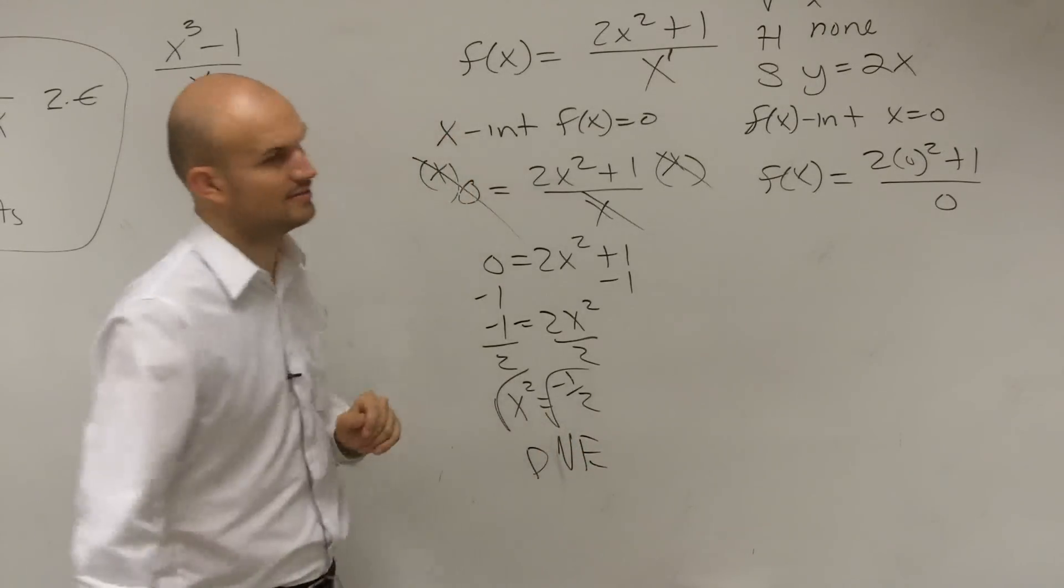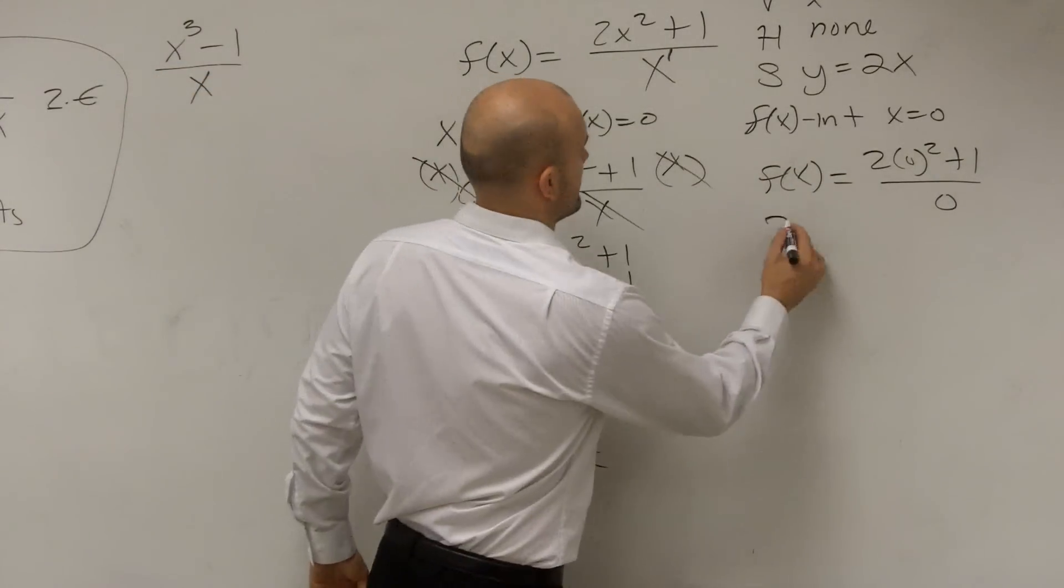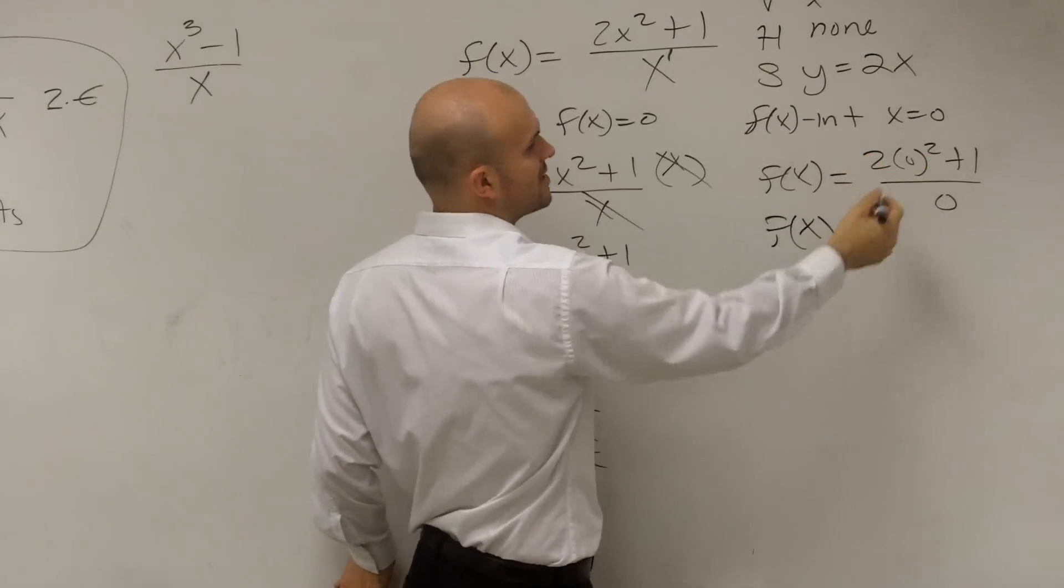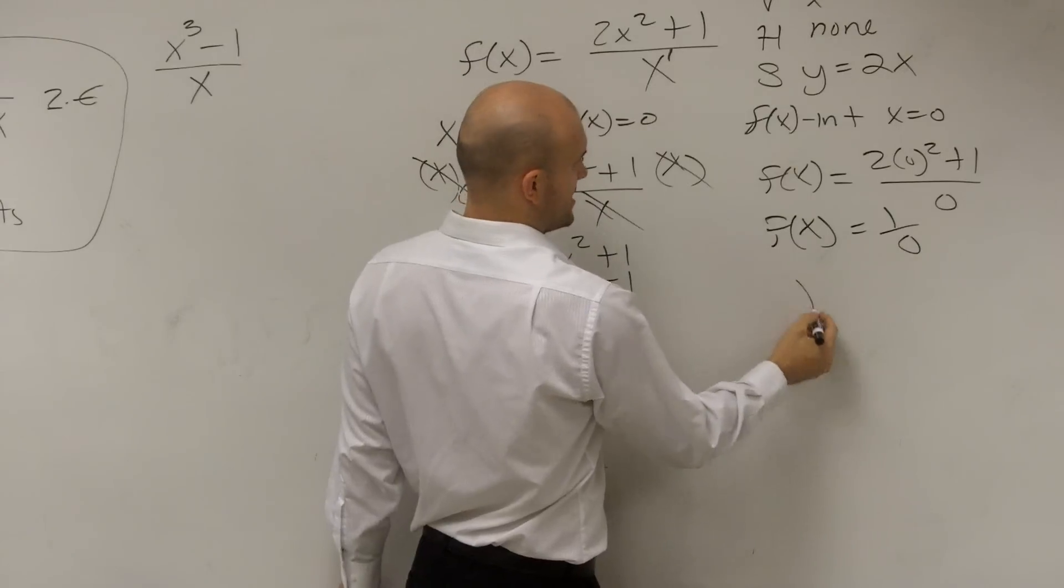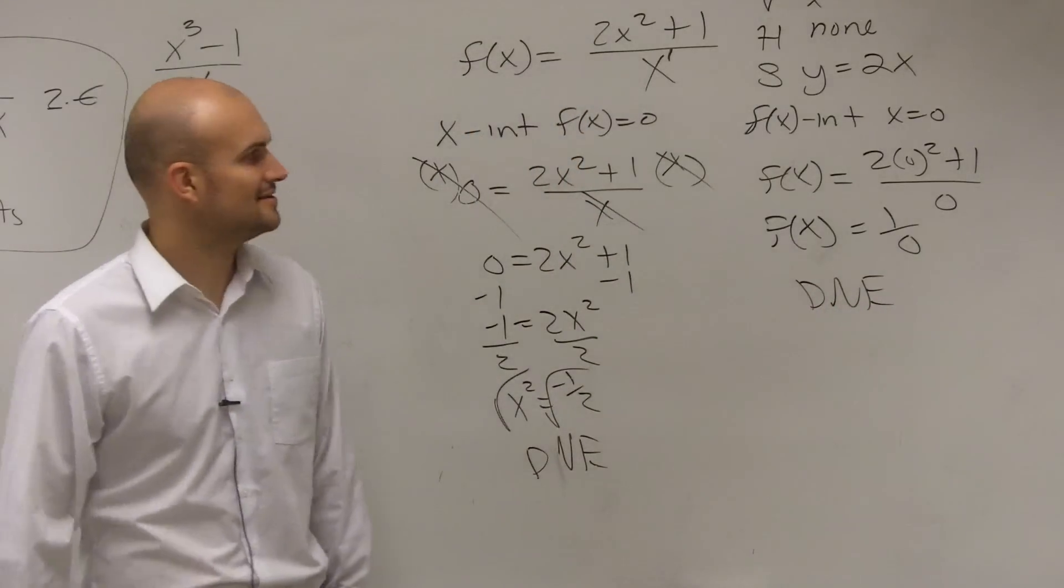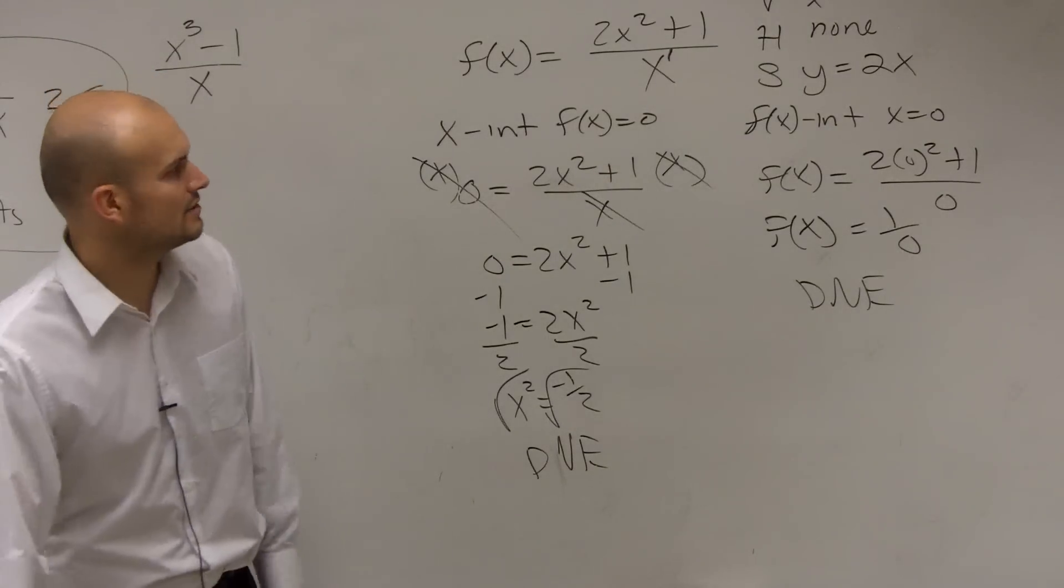That's supposed to be a do not exist. We don't have any x-intercepts. For this one, my f of x is 2 times 0, so I have equals 1 over 0. I proved to you again that that does not exist, right? So therefore, my graph does not cross the x, nor does it cross the y-intercept. Kind of crazy.